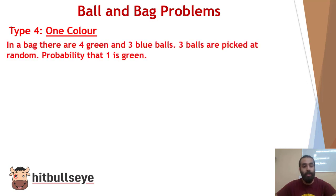So in a bag, there are 4 green and 3 blue balls. 3 balls are picked at random. We have to find the probability that one of the balls is green. Now solving this, we have 4C1.